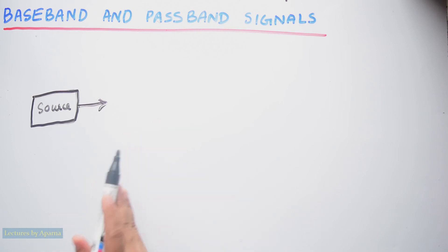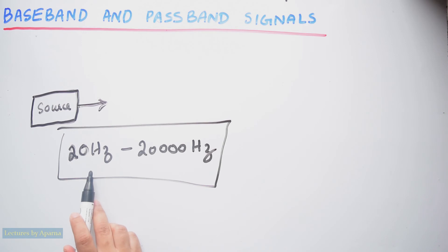The audio signal coming from a source has a baseband frequency range of 20 hertz to 20,000 hertz. If it is transmitted in this range then it is baseband transmission.